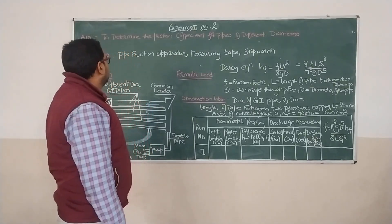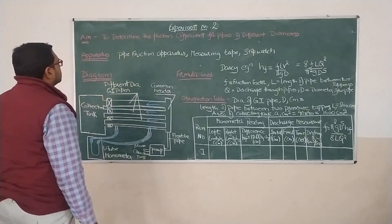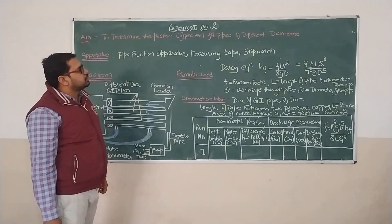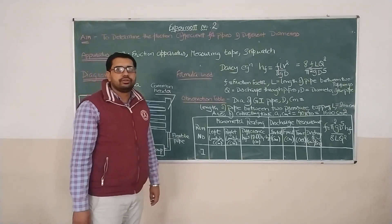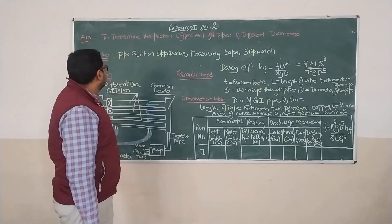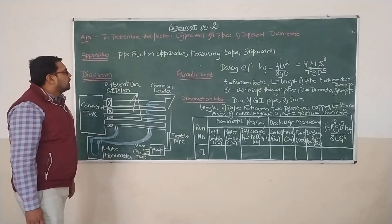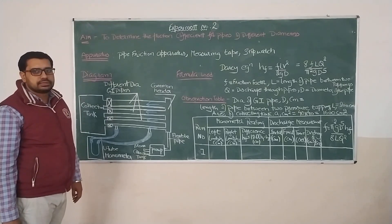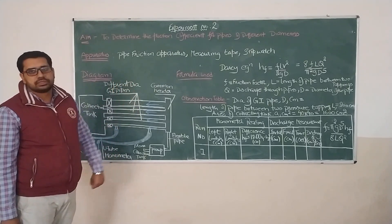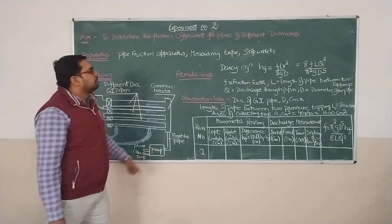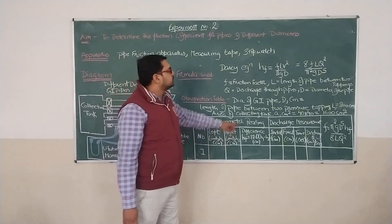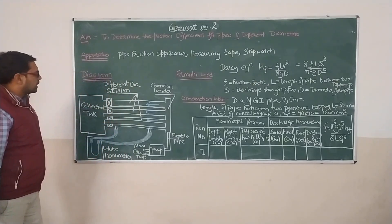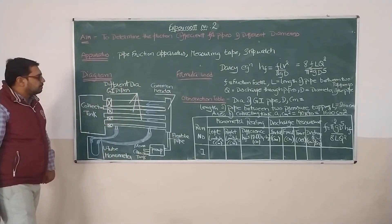Hello students, today we will discuss this experiment to determine the friction coefficient for pipes of different diameters. For this, we are having an apparatus by the name of pipe friction apparatus, specially designed for this experiment, along with a measuring tape and a stock box. If you see this diagram, this diagram is for our apparatus.